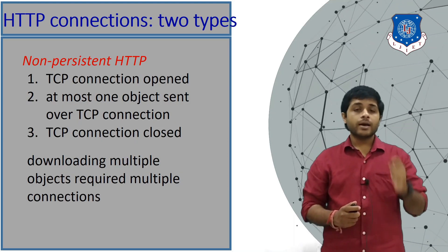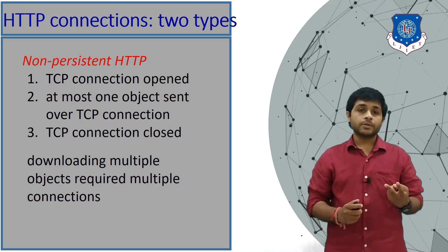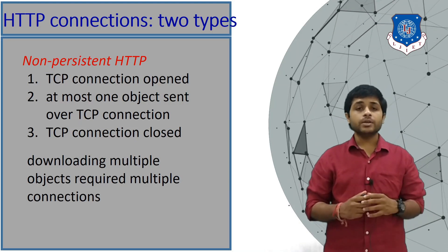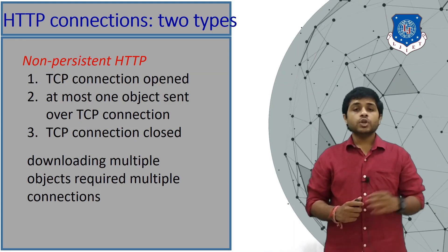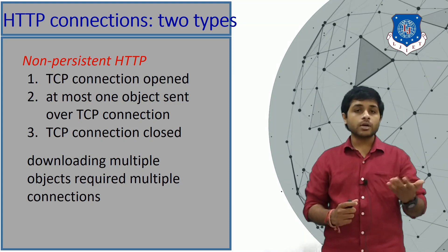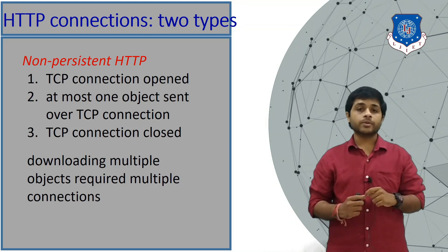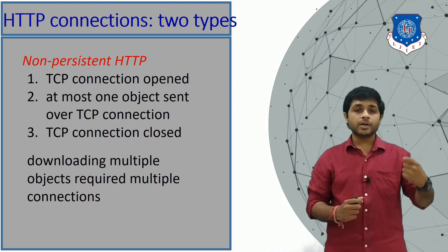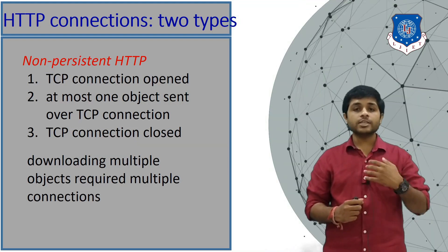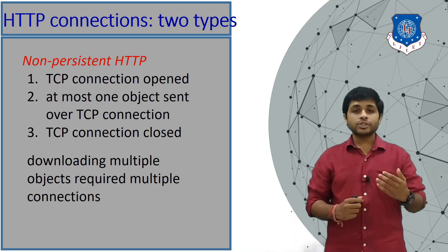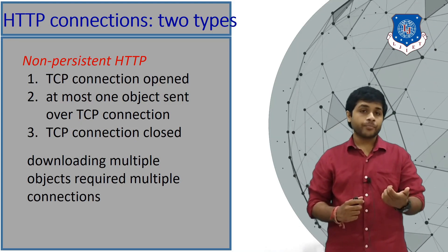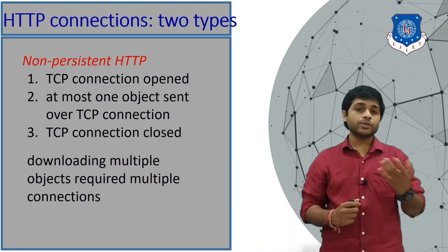HTTP has two types: non-persistent HTTP and persistent HTTP. In non-persistent HTTP, when your computer wants to connect to the server, it first creates a TCP connection and sends the TCP connection request to the server. After the connection is established, only one object is sent over the TCP connection.